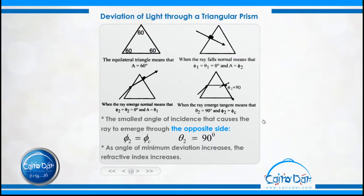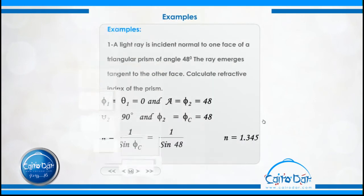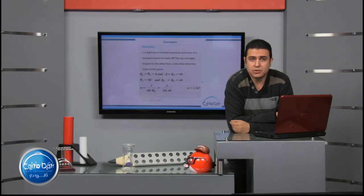The smallest angle of incidence that causes the ray to emerge through the opposite side gives φ₂ = φ_c and θ₂ = 90 degrees. Also, please remember: as the angle of minimum deviation increases, the refractive index increases.